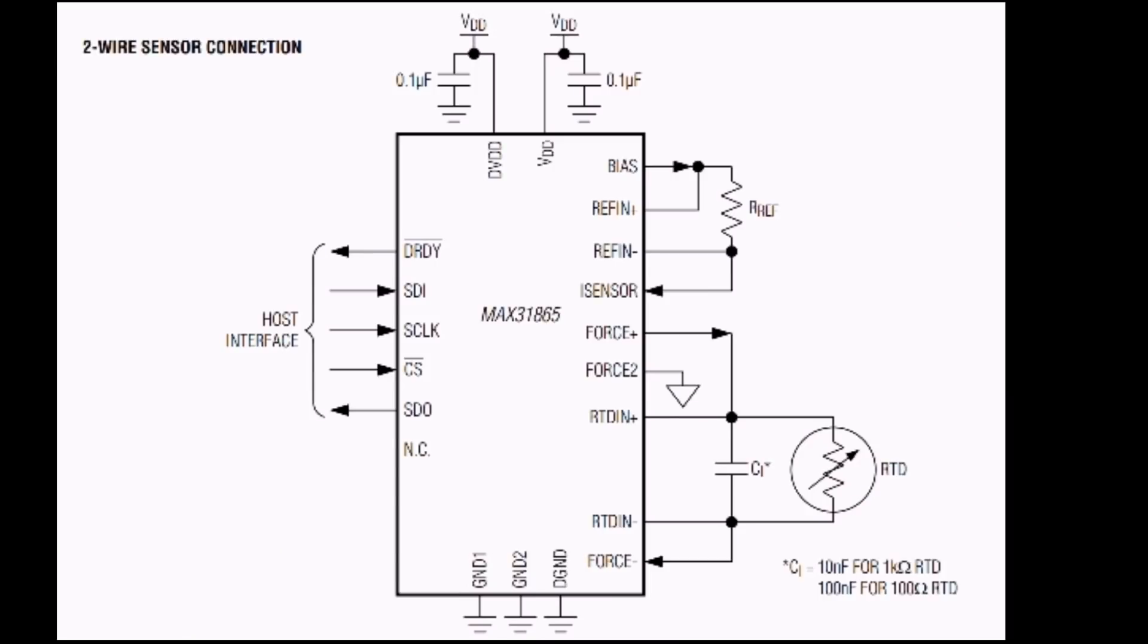To measure the RTD's resistance, we connect our reference resistor in series with the RTD. Here, at ref in plus and minus and RTD in plus and minus respectively. We then apply the bias voltage to the top of the reference resistor and the same current flows through both the reference resistor and the RTD.